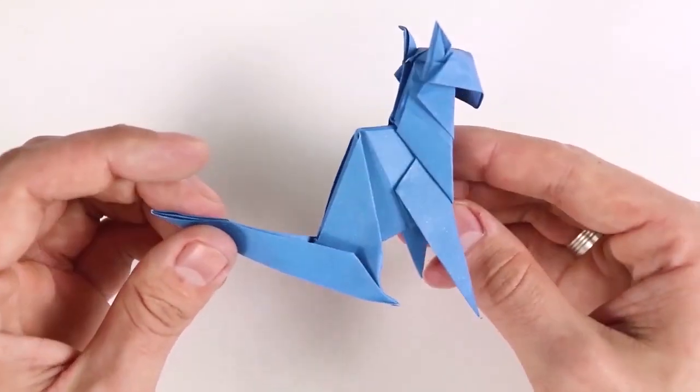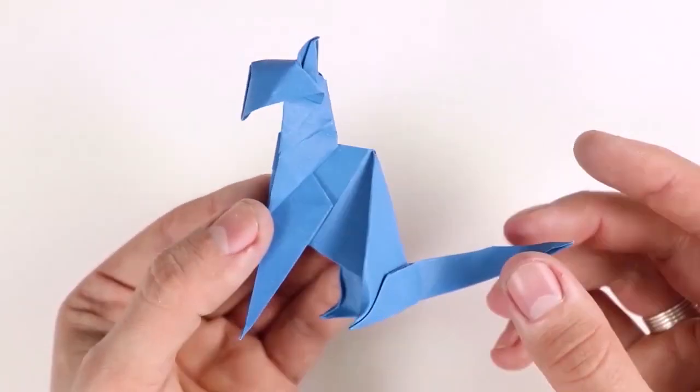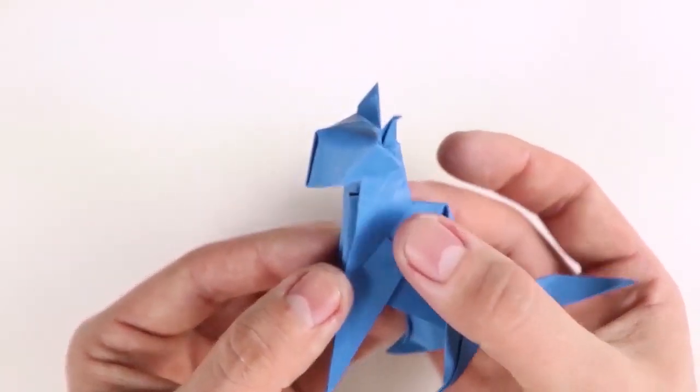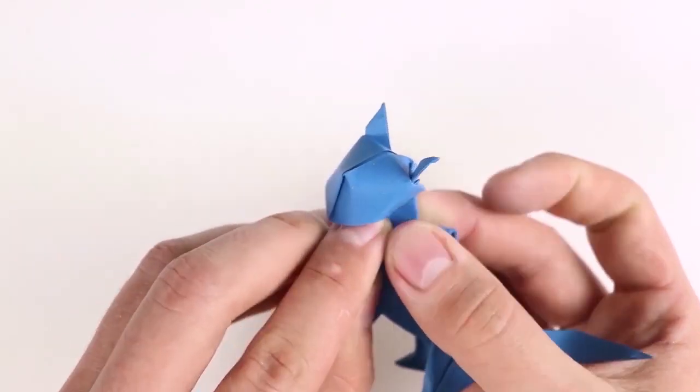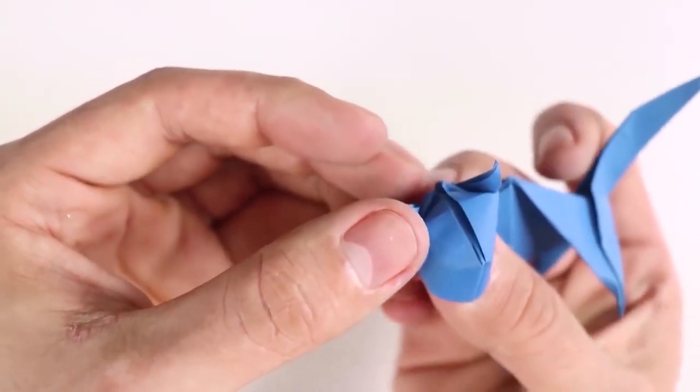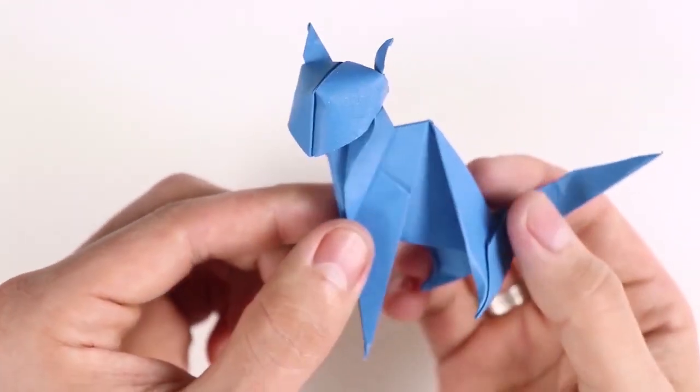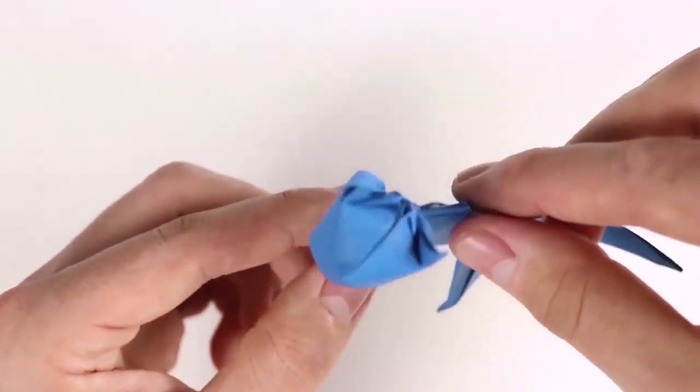As the final detail, well, as you can see, the cat is facing forward. If you want the cat to look sideways, just bring the first layer of the neck to the side like this. Hold tight. And our origami cat is ready.